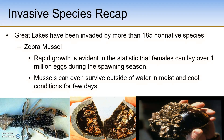By 1992, established populations of zebra mussels were found in the Arkansas, Cumberland, Hudson, Illinois, Mississippi, Ohio, and Tennessee Rivers. By 1994 — just six years after first being discovered in the Great Lakes region — the following states had reported zebra mussels within their borders: Alabama, Arkansas, Illinois, Indiana, New York, Ohio, Utah, Vermont, and West Virginia. The list goes on.